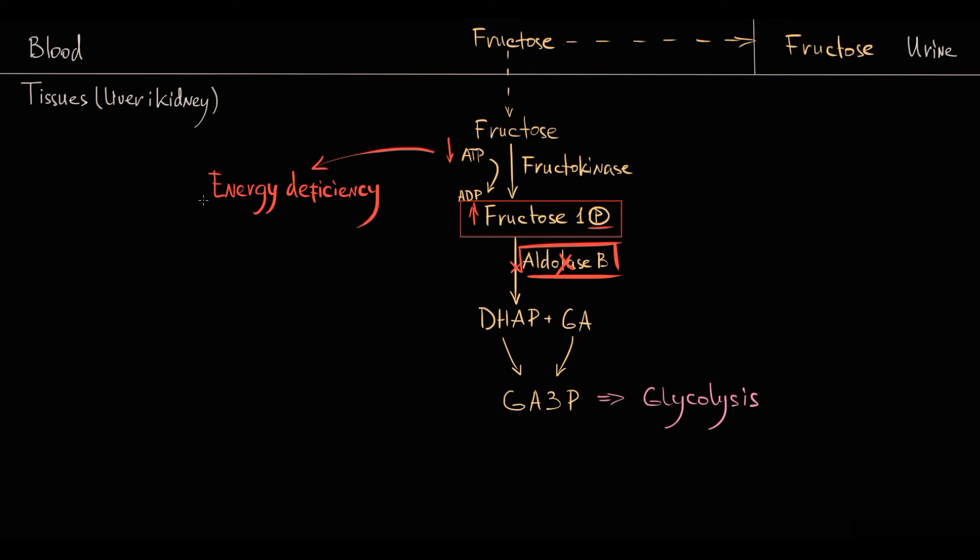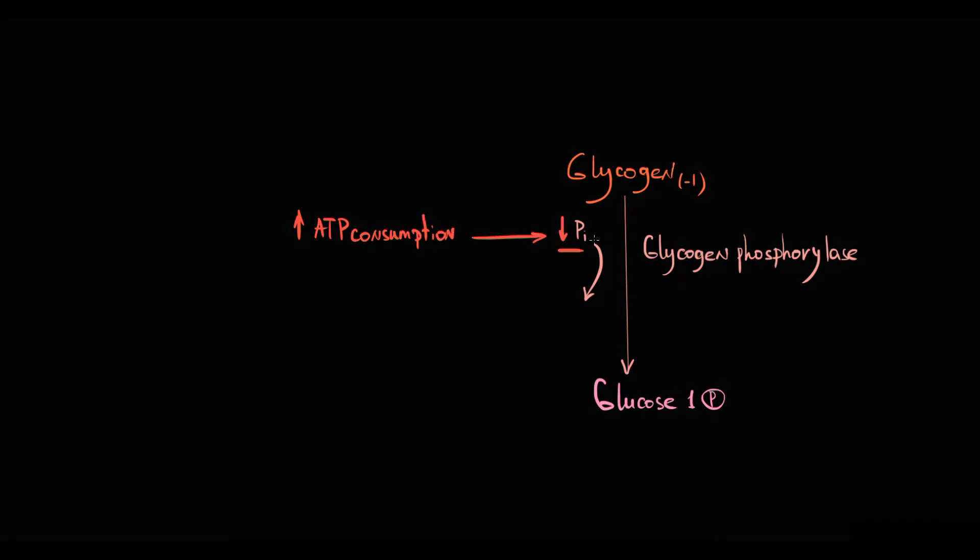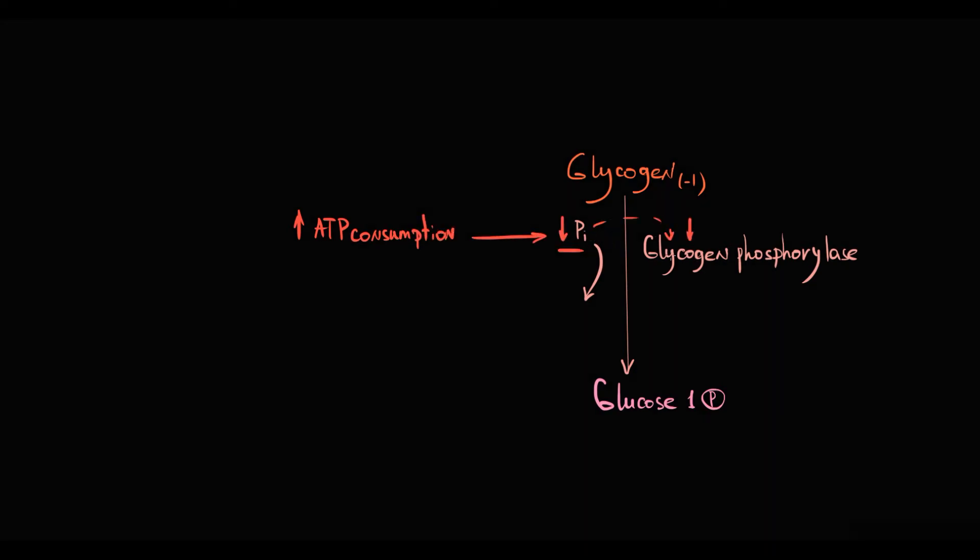Depletion of intracellular phosphate causes decreasing activity of hepatic glycogen phosphorylase, thereby it inhibits glycogenolysis. Because recall that to break up glycogen, glycogen phosphorylase consumes one inorganic phosphate molecule. And this results in release of one glucose 1-phosphate molecule, and glycogen becomes one glucose molecule shorter. So if the amount of inorganic phosphate decreases, obviously the activity of glycogen phosphorylase decreases, thereby glycogenolysis decreases.